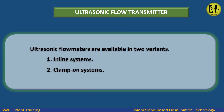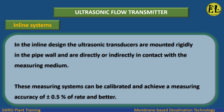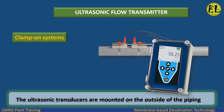Ultrasonic flow meters are available in two variants: inline systems and clamp-on systems. In the inline design, the ultrasonic transducers are mounted rigidly in the pipe wall and are directly or indirectly in contact with the measuring medium. These systems can be calibrated and achieve a measuring accuracy of plus or minus 0.5% of rate or better. In clamp-on systems, the ultrasonic transducers are mounted on the outside of the piping.